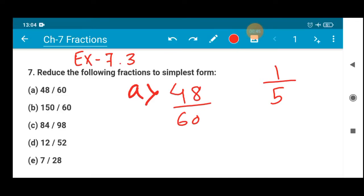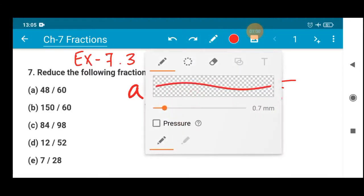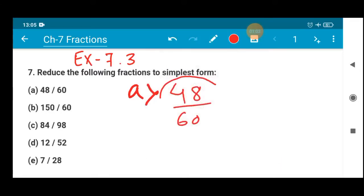We cannot have a cut. Suppose if I cut 5 by 5, but we cannot cut 1 with 5, so that means this fraction is already in reduced form. Now, 48 by 60, we have to reduce this into simplest form.